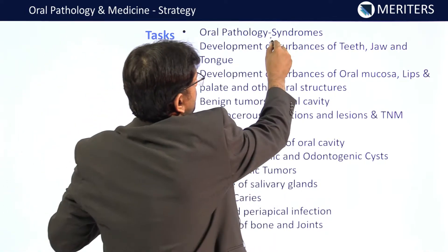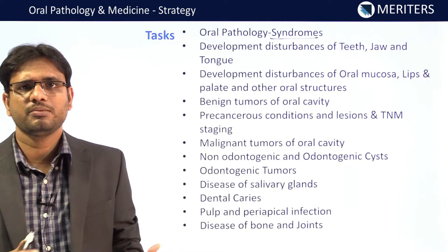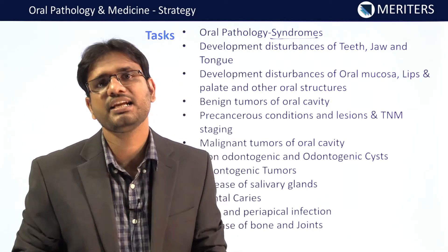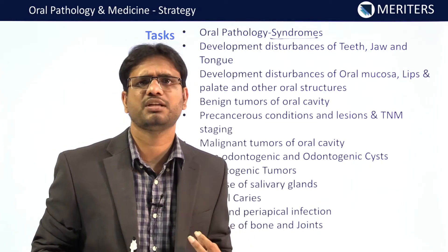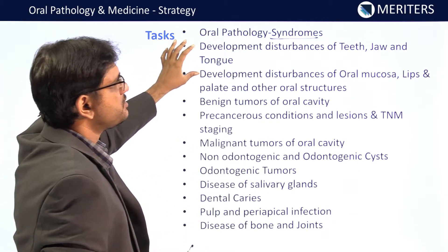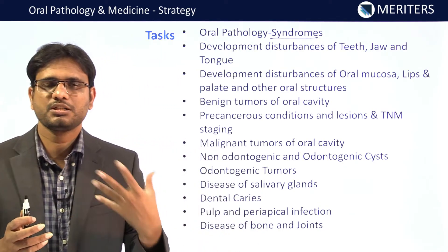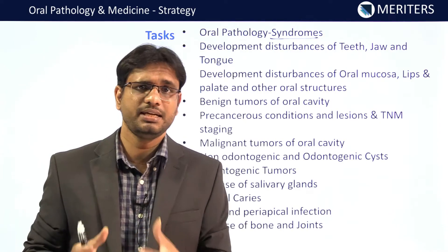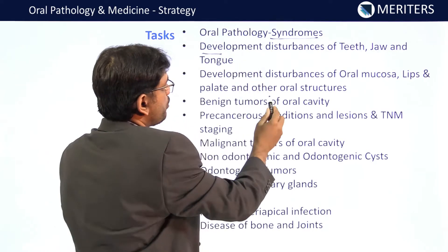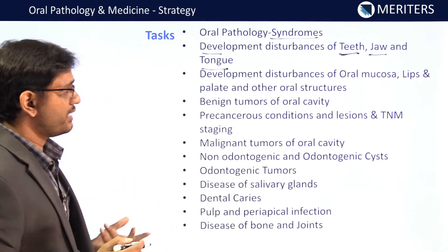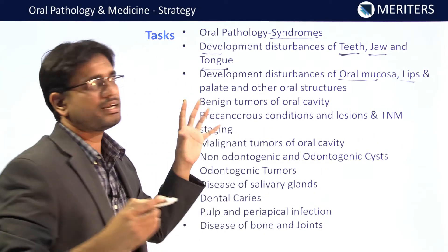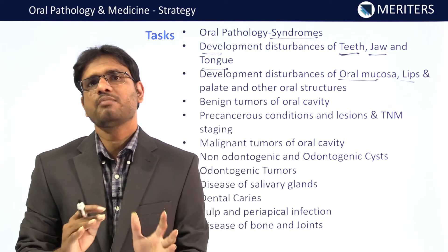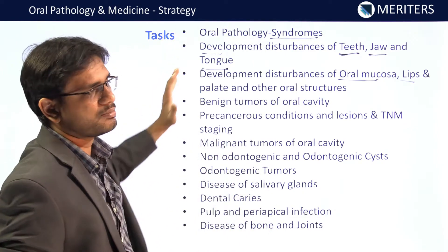Let's start with the task list. First is oral pathology syndromes — syndromes relevant to oral pathology as given in Nevels and Schaeffer's. At least one to two questions are asked from syndromes in any exam, so you should have a very good knowledge of all syndromes. Next are developmental disturbances of teeth, jaw, and tongue, which are very important for INICT. A good proportion of questions come from developmental disturbances in NEET also. INICT asks more questions on teeth, jaw, and tongue, while NEET asks more on oral mucosa, lips, palate, and other oral structures. Almost 10% of oral pathology questions can come from developmental disturbances alone.